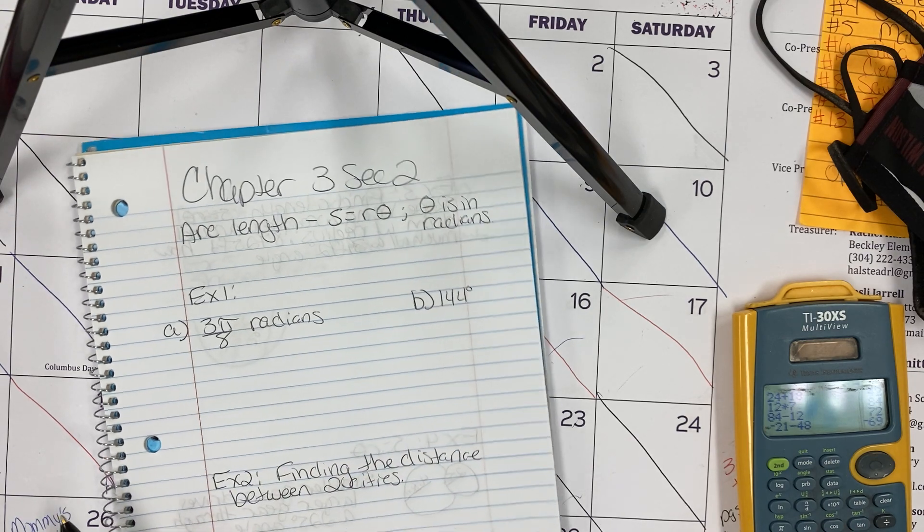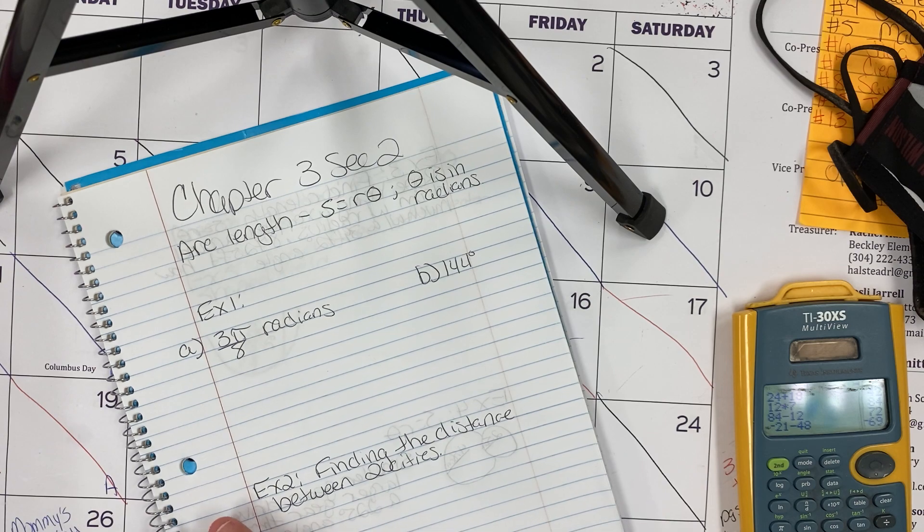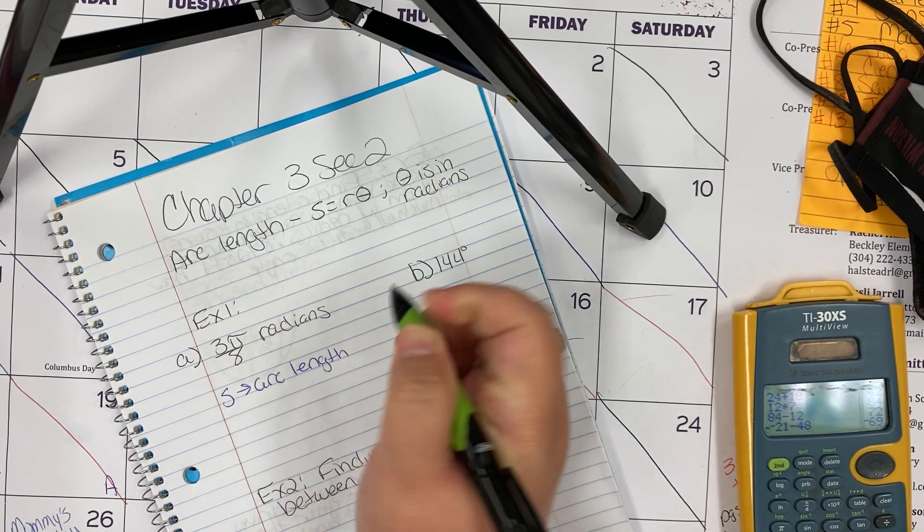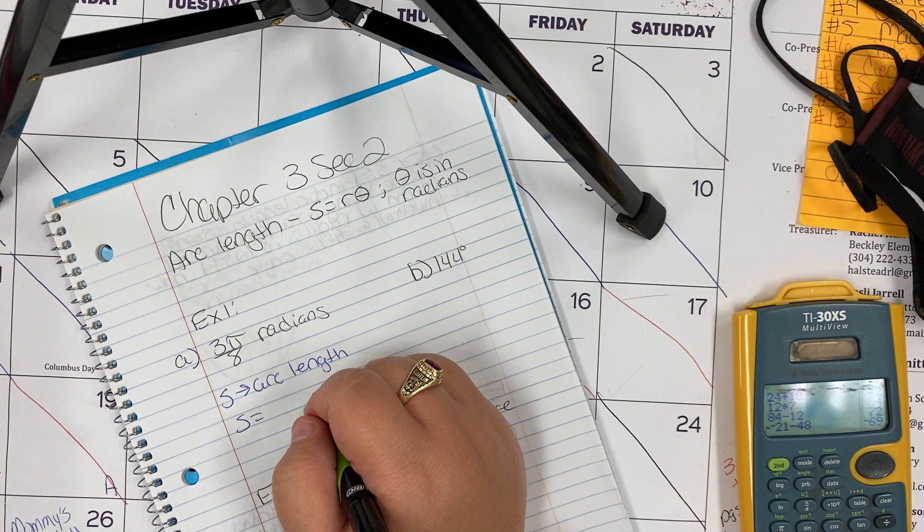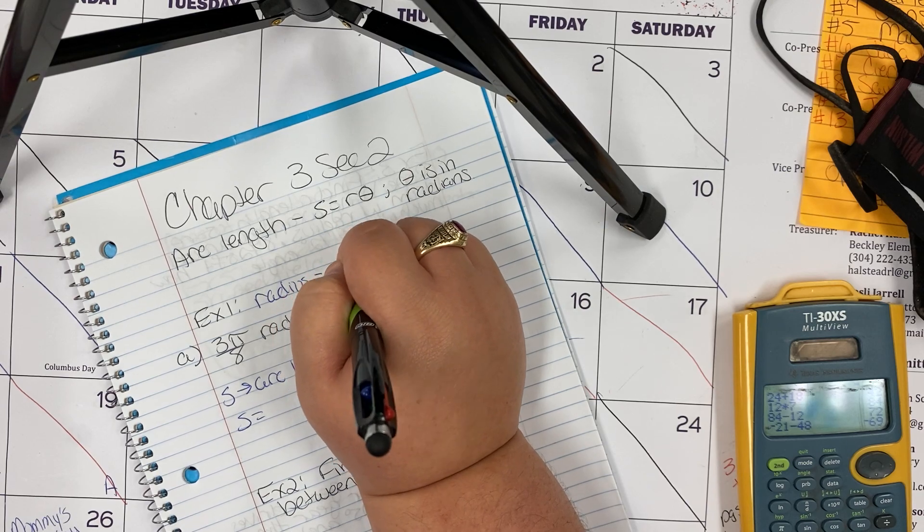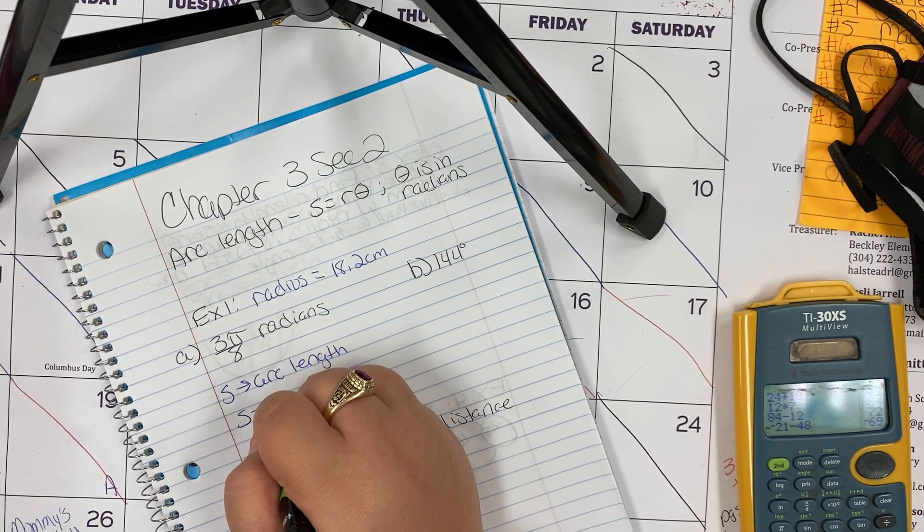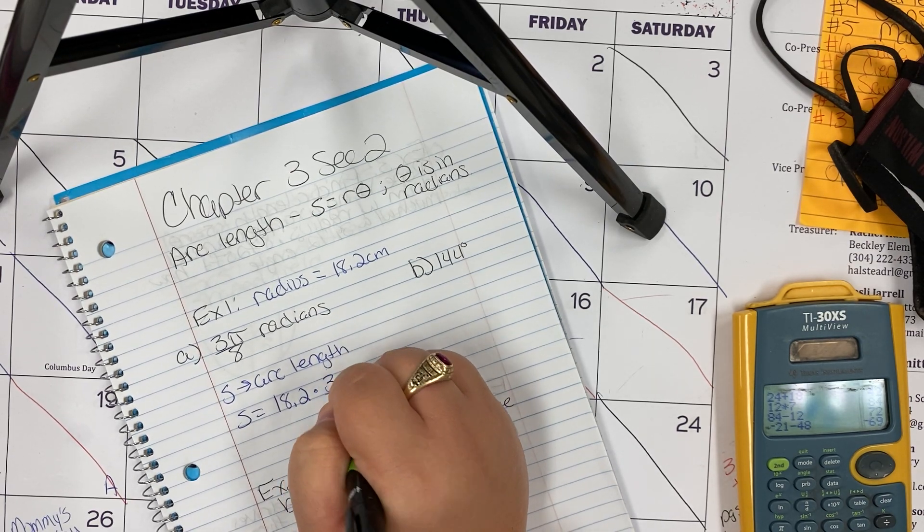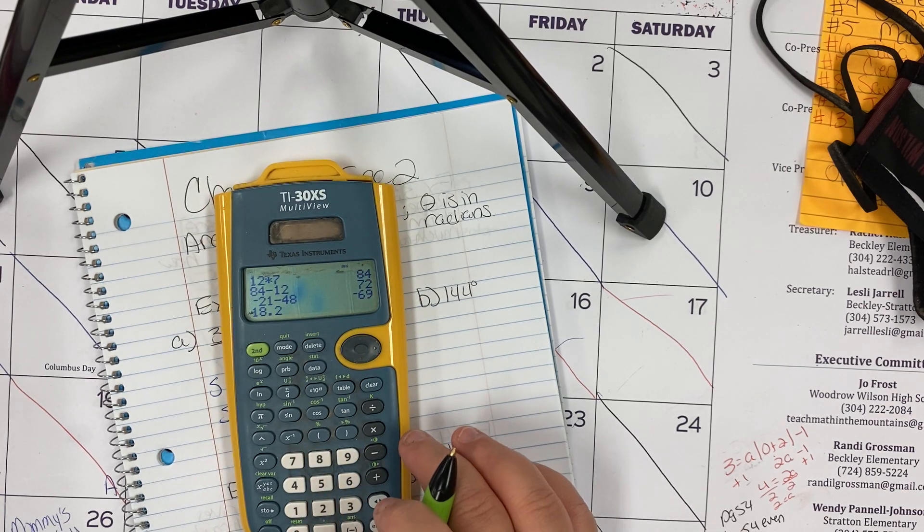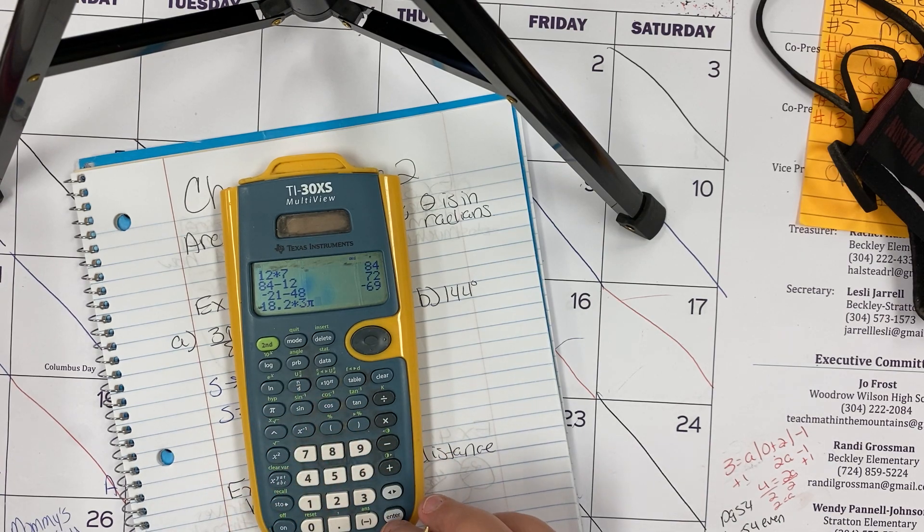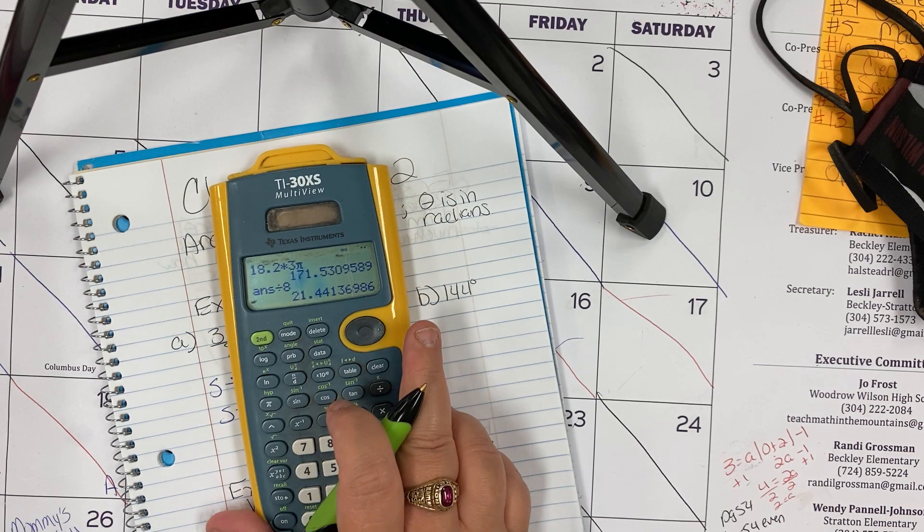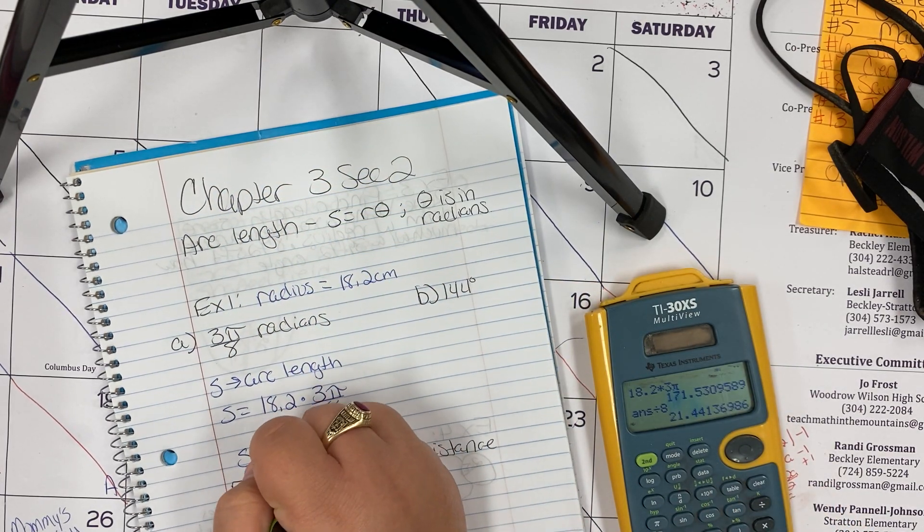With example one we want to find the arc length. We already have an angle that's in radians, so we need to find s. S represents your arc length. In this case our radius equals 18.2 centimeters, so s is going to equal 18.2 times 3π over 8. Here we'll put 18.2 in the calculator times 3π, so you get 171.5, and we're going to divide it by 8 and you get 21.44 centimeters. So s equals 21.44